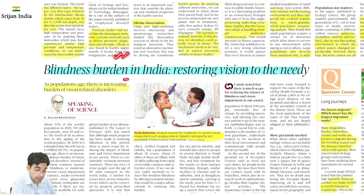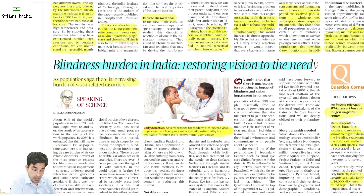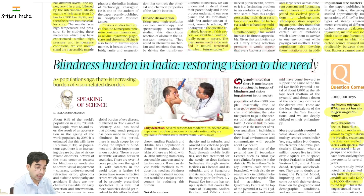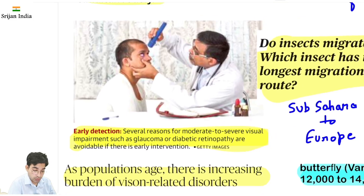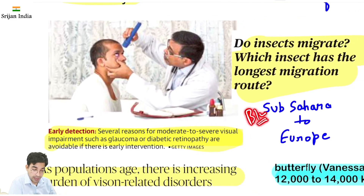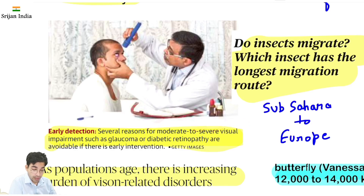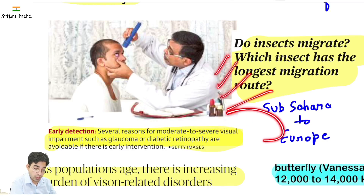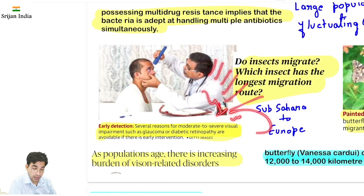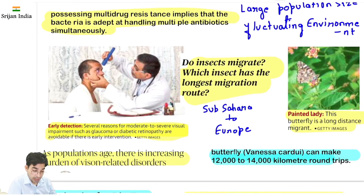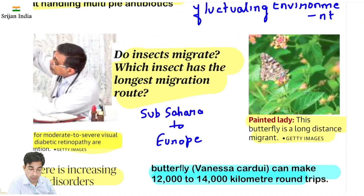Blindness burden in India. Restoring vision to the needy. Ek bada reason hai gadgets and computers — jis tezi se usage badh raha hai, ye bhi blindness create kar raha hai. Several reasons: moderate to severe visual impairment, glaucoma, diabetic retinopathy — lifestyle disease hai. Population jaise jaise age ho rahi hai, vision-related disorders badhte ja rahe hain.